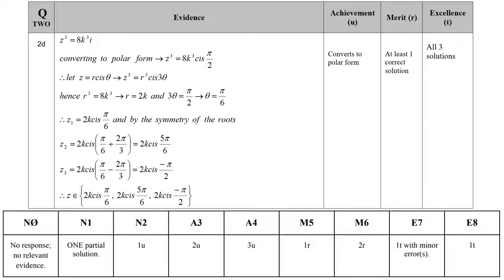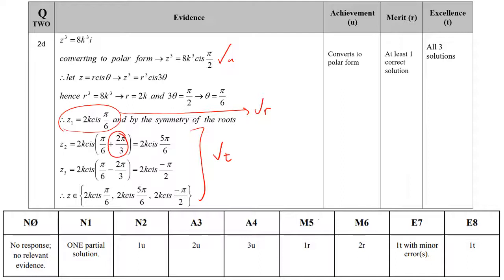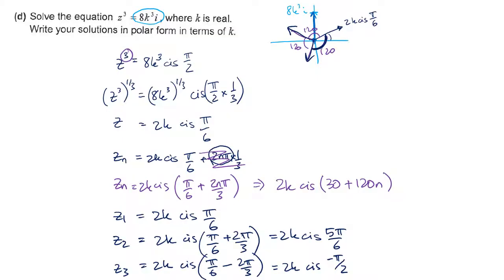Converting to polar form is your achieved tick. Getting one correct solution by applying De Moivre's theorem — raising to the power of a third — is your merit. Finding all three solutions is your excellence. In degrees those are 30, 150, and negative 90. Mark that question out of 8. Getting to polar form is achieved, at least one correct solution is merit, and all three answers is excellence.